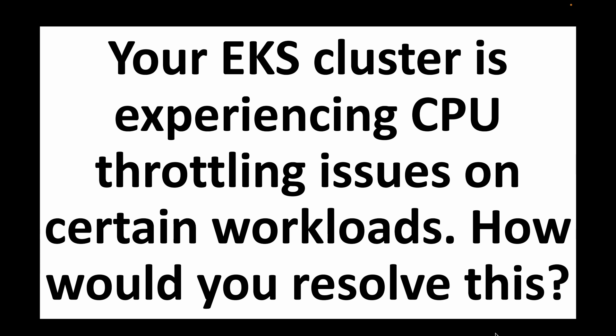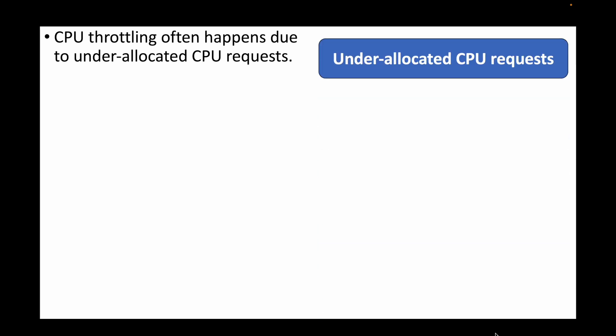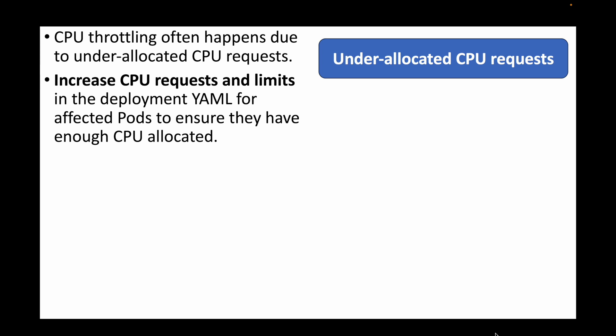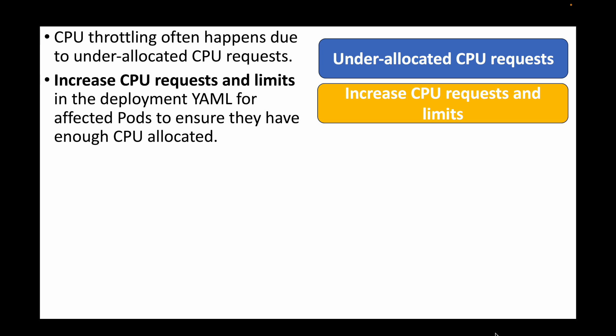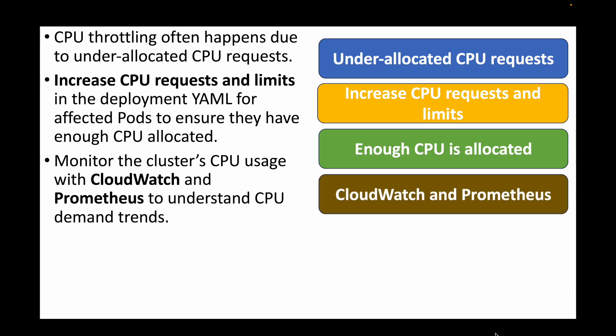The next question is: your EKS cluster is experiencing CPU throttling issues on certain workloads. How would you resolve this? CPU throttling generally happens when you have under-allocated CPU requests. In this case, you will need to increase the CPU requests and limits within your deployment YAML file for the affected pods, ensuring the pods have enough CPU allocated to run.